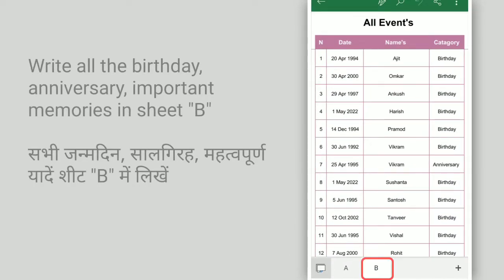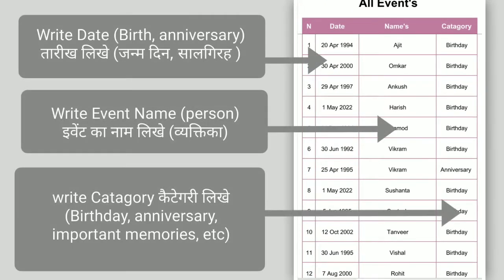Write all your events — birthday, anniversary, and important memories — in Sheet B. For example, write the event name in the name column, write the date in the date column, and write the category in the category column. Category means birthday, anniversary, or something like this.